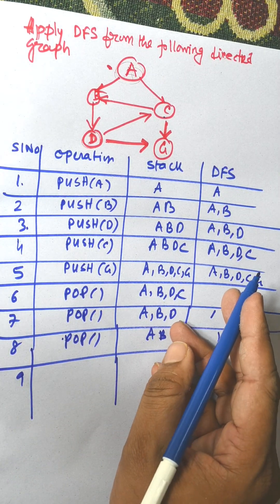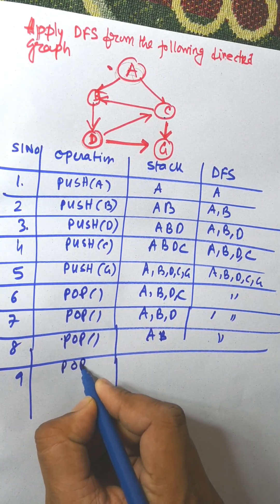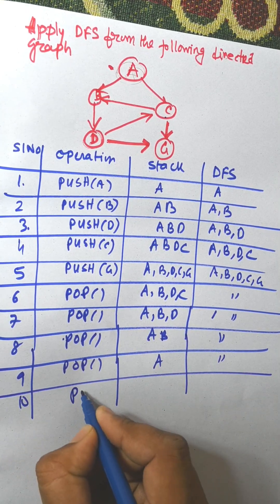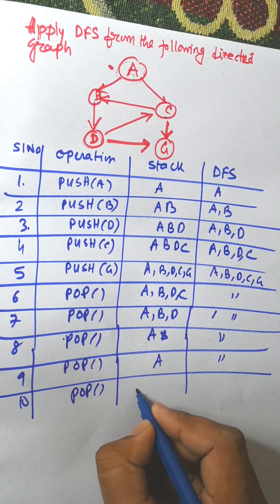All nodes are visited. We need to perform pop operation. A is there. Finally from A, stack is empty.